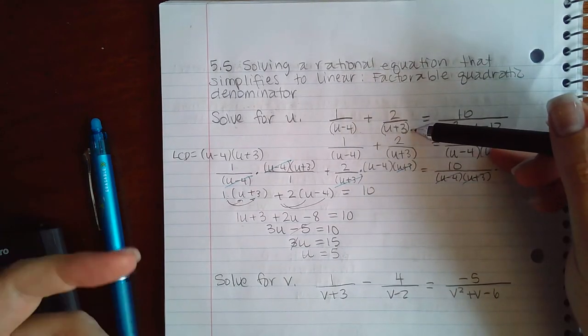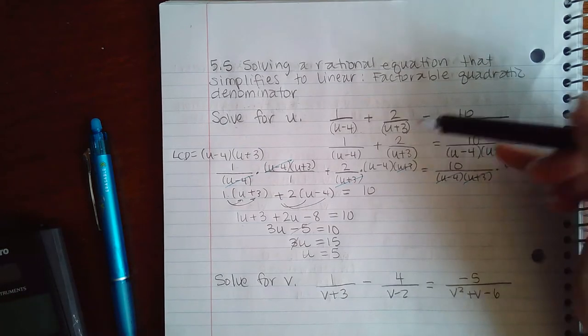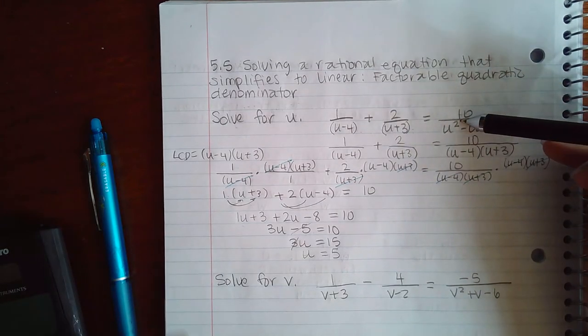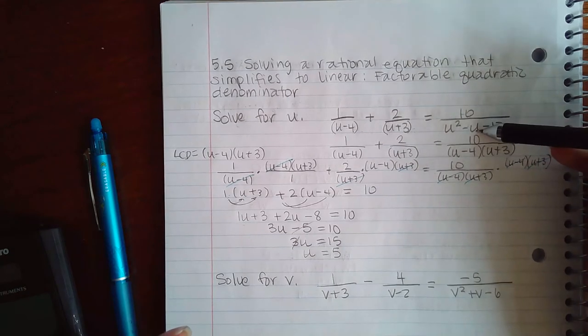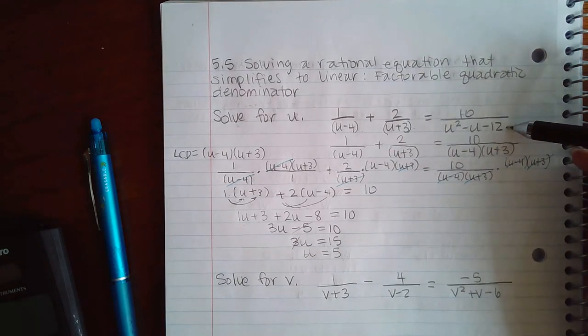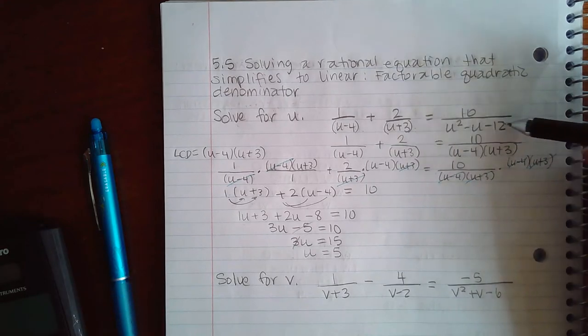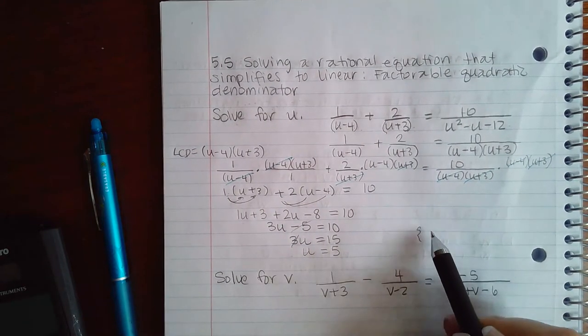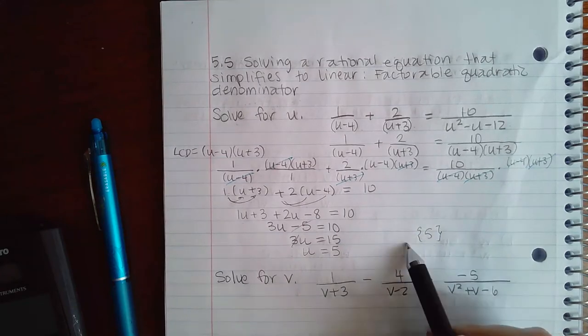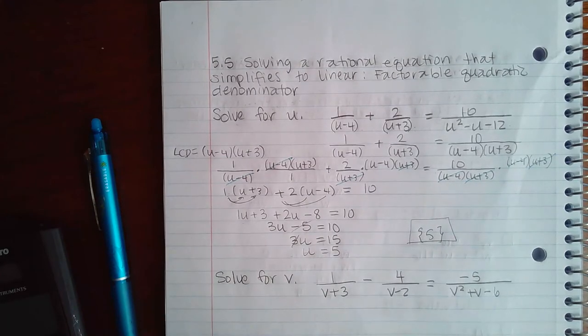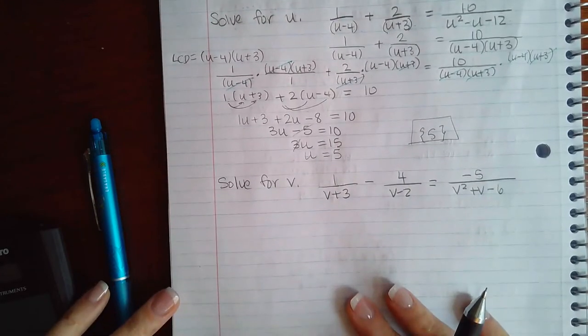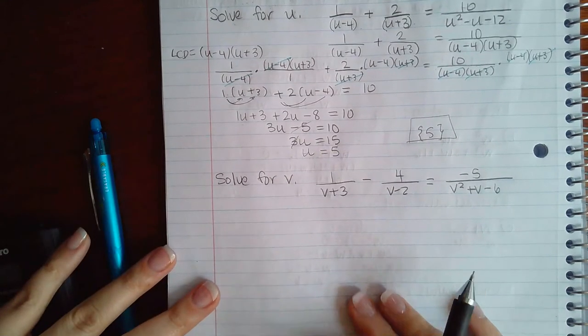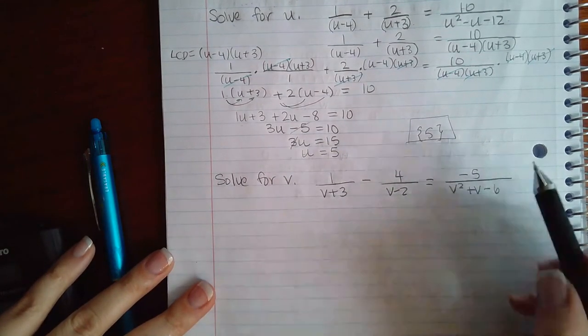5 squared is 25 minus 5, which is 20 minus 12, equals 8. So this is not 0 either. As long as this does not make any of those denominators 0, that is my solution. Now let's go on to another example.